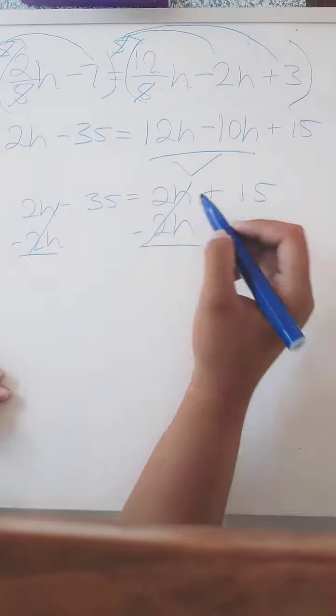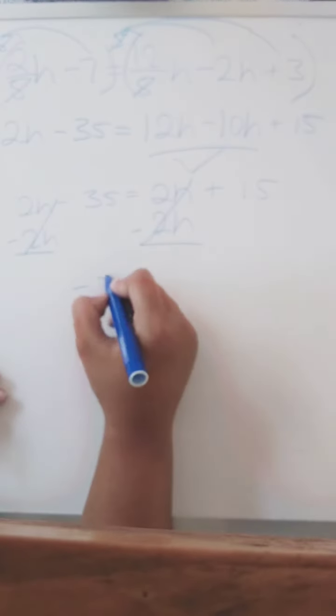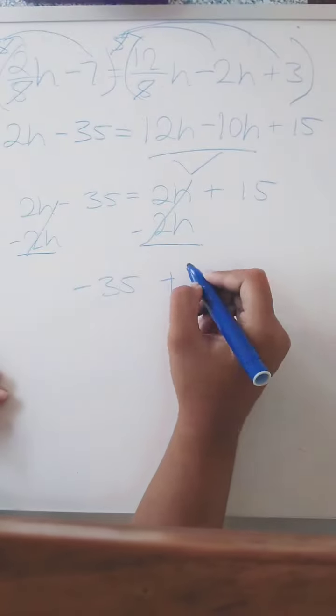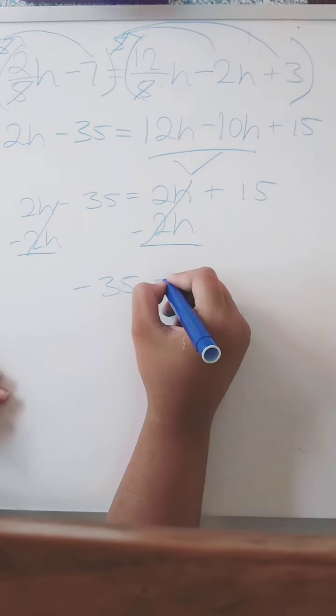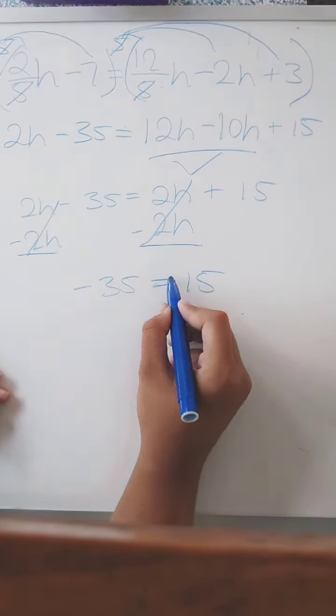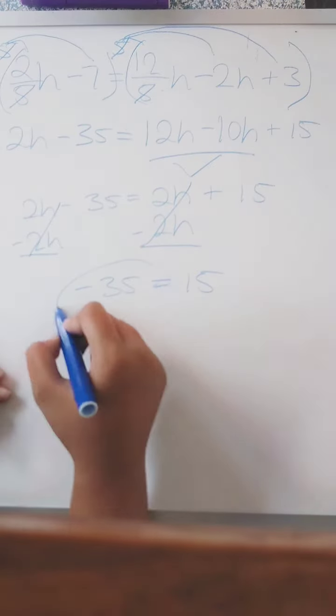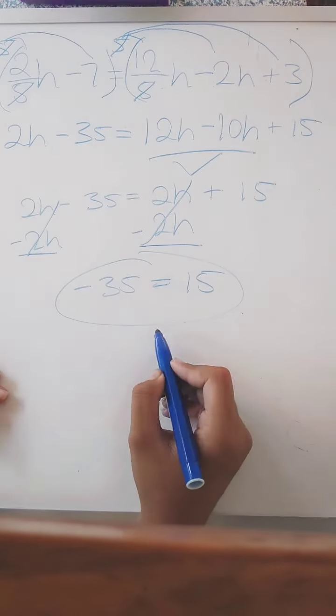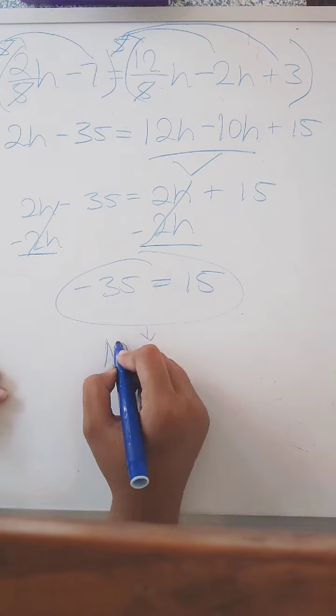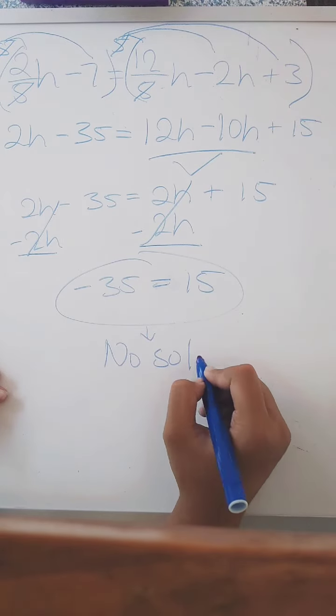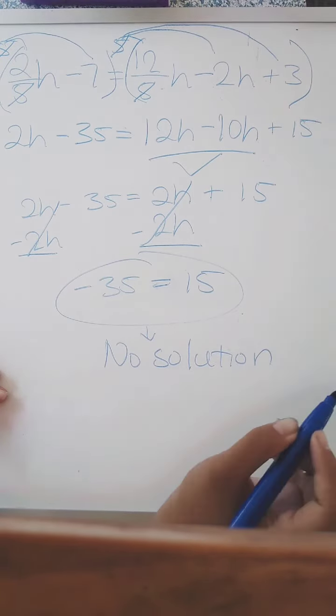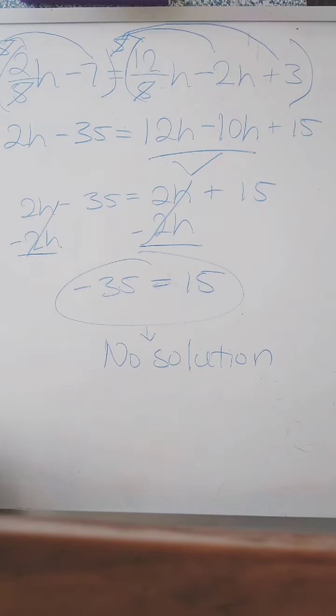And we have zero. We don't have to write zero, so we just write what's left in the equation, which is negative 35 equals 15. Since there's no more variable and both sides of the equations are integers, that's our result, and our result is called no solution. So that's the answer for our first equation.